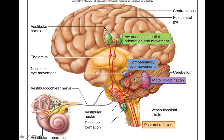It's complicated, but this shows how all these structures correlate. The key takeaway is knowing which receptors are found within the utricle and saccule versus those in the ampulla, and how they differ in the types of movements they monitor — linear acceleration versus rotational movement.